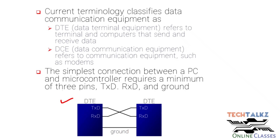For a personal computer, the transmit pin connects to the microcontroller's receive pin. That means the TX pin of one side connects to the RX pin of the other side.